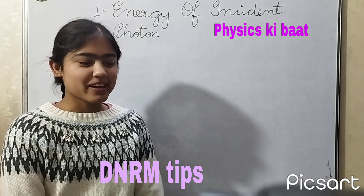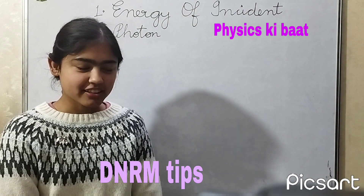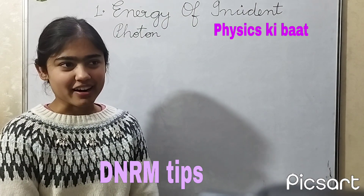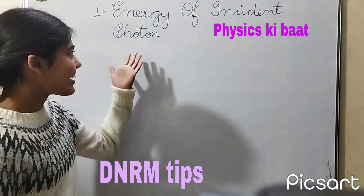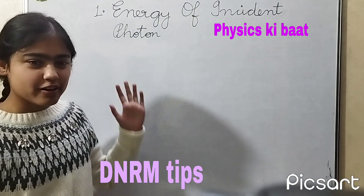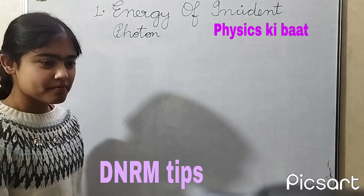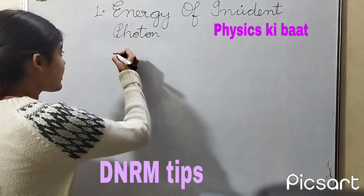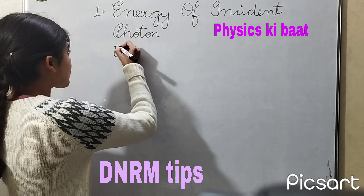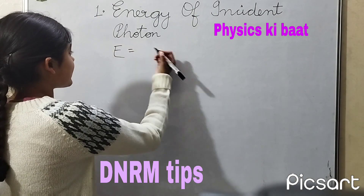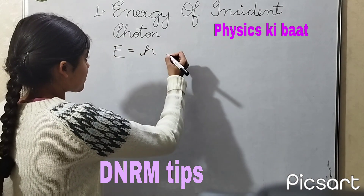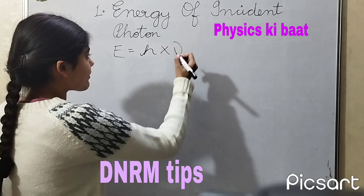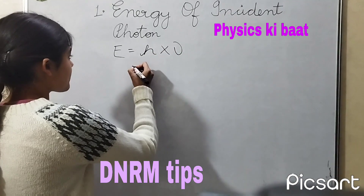Hello everyone, today I will give you two tips from the dual nature of radiation and matter. The first tip is for the energy of an incident photon. As we know from Planck's theory, energy can be written as the product of Planck's constant and the frequency of the incident photon.